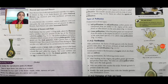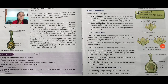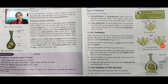During fertilization, after landing on the stigma the pollen grains germinate and produce pollen tubes. You can see the structure of fertilization: pollen grain, pollen tube, ovary, and female gametes present inside the ovary. Finally, the male gamete fuses with the female gamete — thus fertilization occurs.